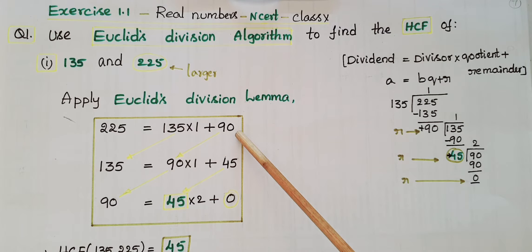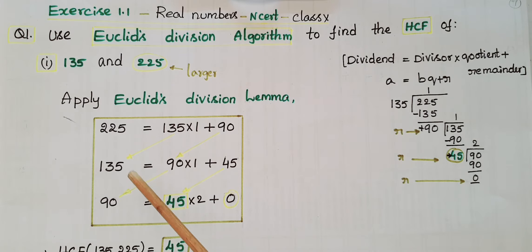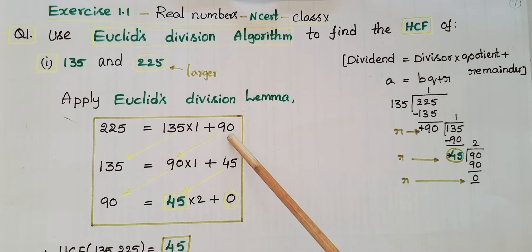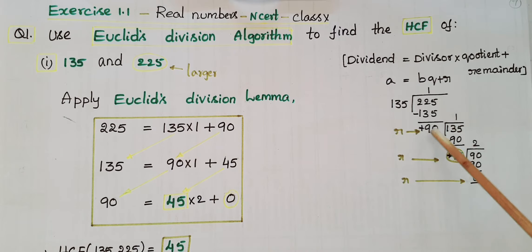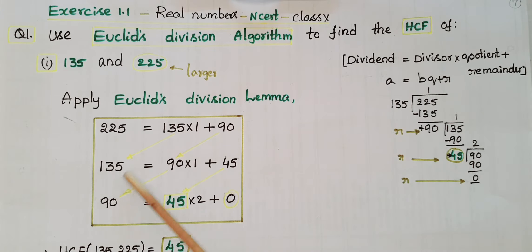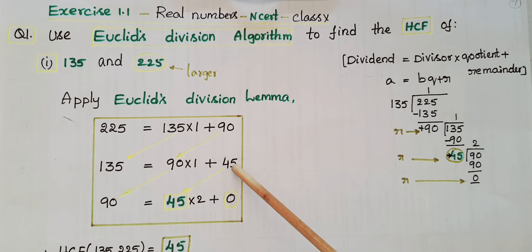The remainder is not equal to 0, so again apply Euclid's division lemma on 135 and 90. Dividing 135 by 90: 90 once is 90, then 135 minus 90 is 45. So 135 is equal to 90 into 1 plus 45, where 45 is the remainder.